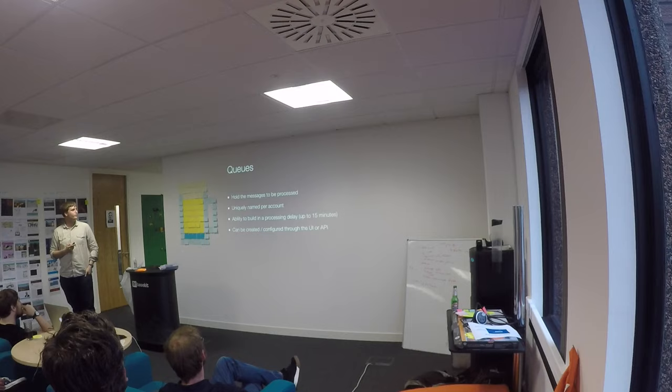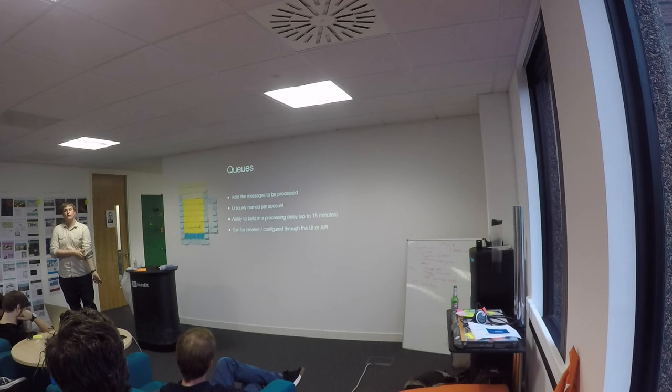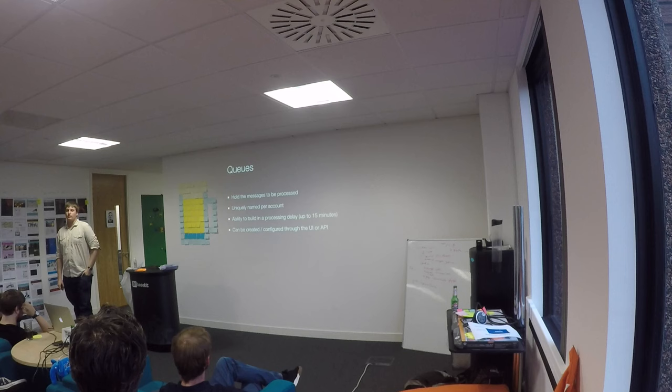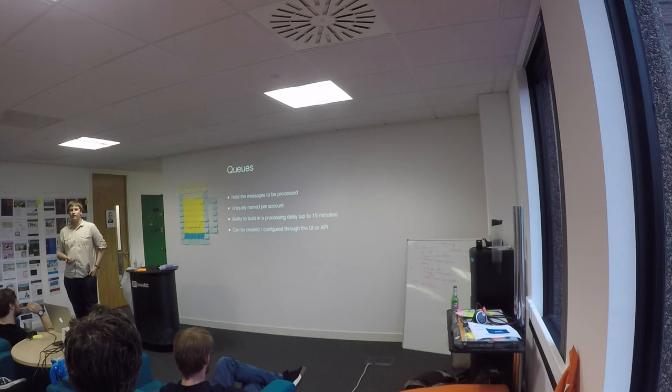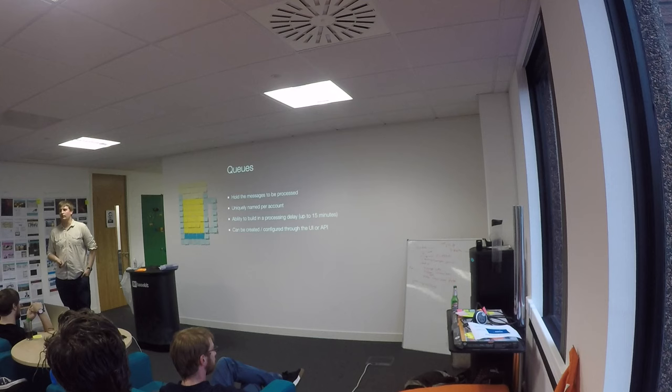What's a queue? It holds a message to be processed - that's as exciting as it gets. On Amazon, each queue is uniquely named per account, so if I've got a queue called 'email' I can't have another one called 'email'. You need to think about how you're going to run your dev environment. We discussed two approaches: you can prefix all your queue names with 'dev' and rely on security controls, or we've actually set up a separate dev Amazon services account.